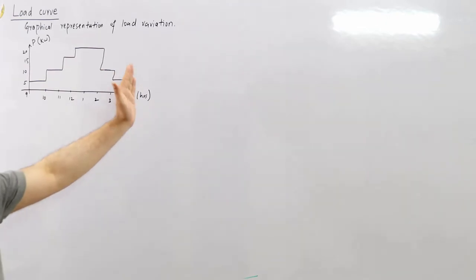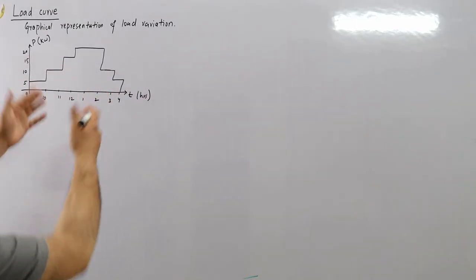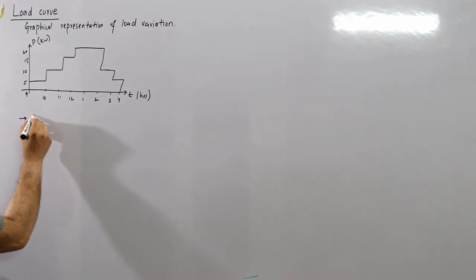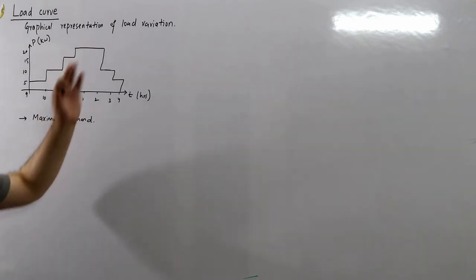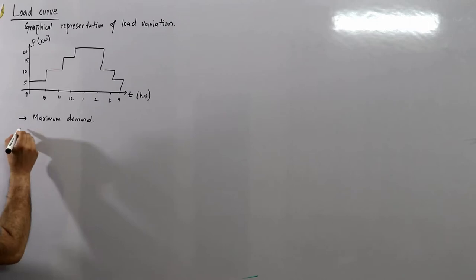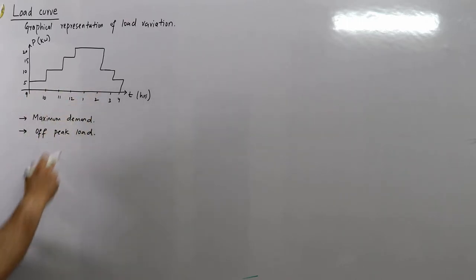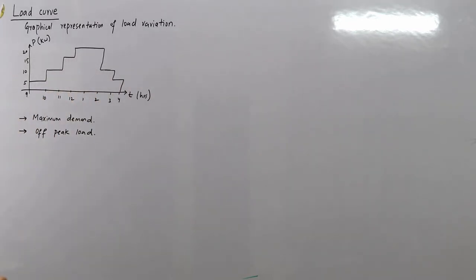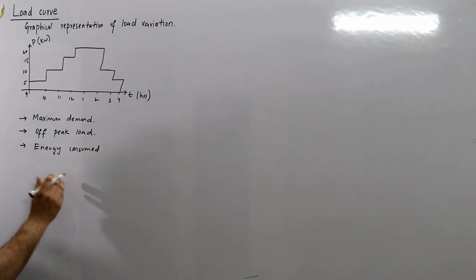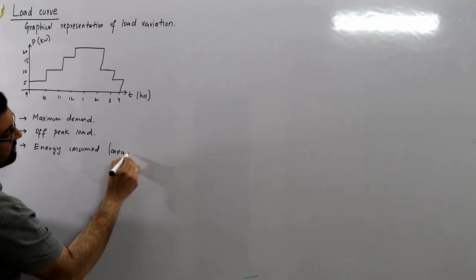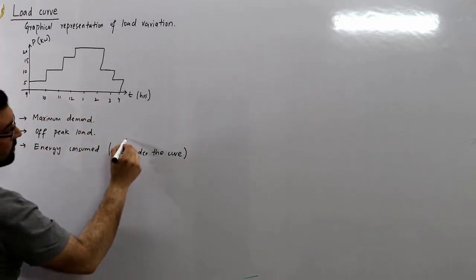From the load curve, you can directly state a number of quantities. The first would be maximum demand - the highest point on the load curve, the peak load. From here you can see it's 20 kilowatts. The second is the off-peak load, or minimum load, which in this case is 5 kilowatts. Third, you can find the energy consumed from the area under the curve, because this is a rectangular graph and power into time gives you the energy.